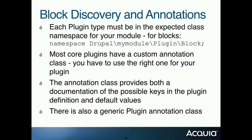How does the discovery and annotation system actually work? It's a combination of two things. First, the namespace — which also determines where on disk you save the file. For a block plugin, the namespace must follow the pattern Drupal\[module_name]\Plugin\Block. You can't use any other namespace because that's part of how Drupal finds those plugins. Second, the block class must have a @Block annotation or Drupal won't accept it as a block plugin. The plugin manager calls code that looks through class files, checks if it's in the right namespace to be a block plugin, and if so, whether it uses the right annotation — then parses and returns it to the manager as a discovered plugin.